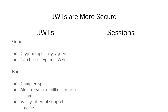On the bad side, it's a very complex spec — specifically the JOSE family of specifications, covering the encryption, JSON web keys, and related things. Multiple vulnerabilities have been found over the last few years. There's vastly different support across all the different JWT libraries. For instance, getting a Python JWT library and a Node JWT library to encrypt and sign things in the same way is pretty tricky — mainly because this stuff hasn't been around that long.